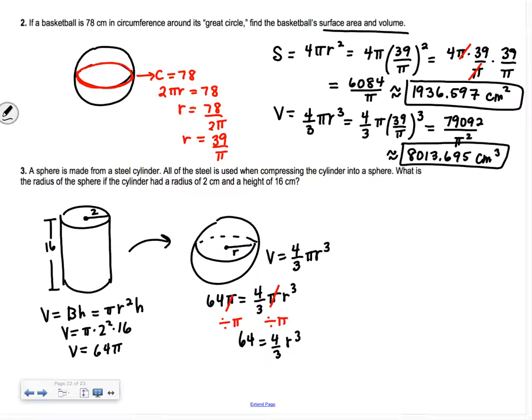Let's get rid of the 4/3. The easiest way is to multiply both sides by 3/4. That cancels the 4/3 and 3/4 because it's 12/12, which becomes 1. We get 3/4 of 64, which is 48, equals r³. So r is the cube root of 48.